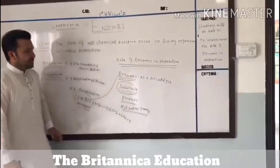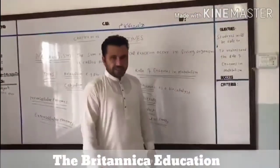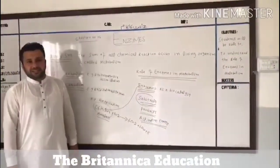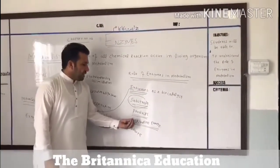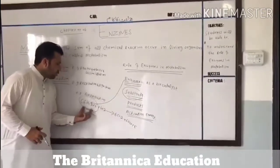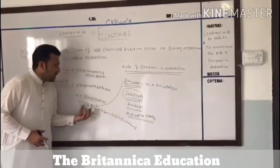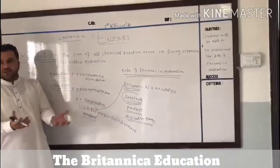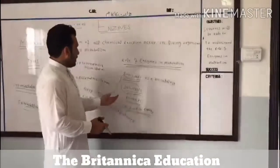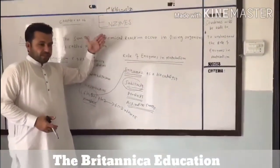Now we need to understand activation energy. The minimum energy required to start a chemical reaction is called activation energy. For example, if a reaction requires 100 units of energy without an enzyme, the enzyme reduces that requirement to only 20 units, making the reaction much easier to carry out.